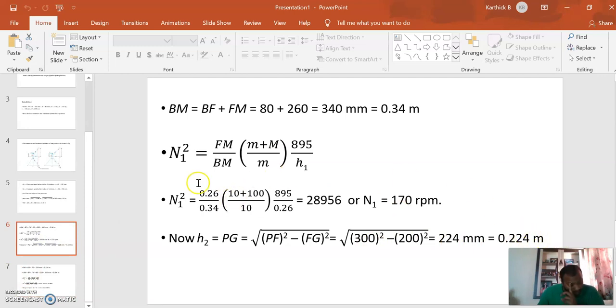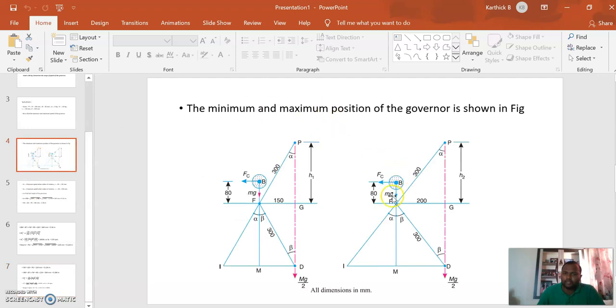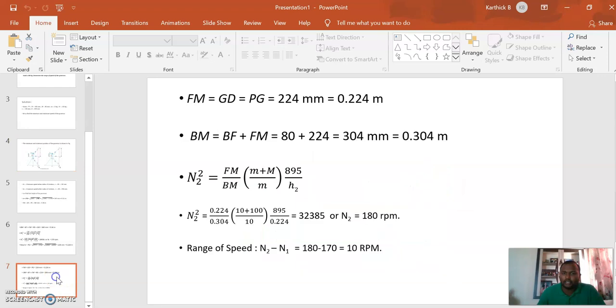We write the same equation: N2 squared equals FM by BM times (m + M) by m. Again, FM is the same as PG, which is 0.224 meters.